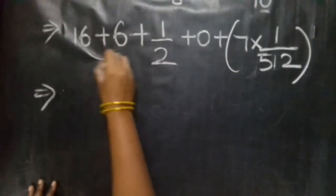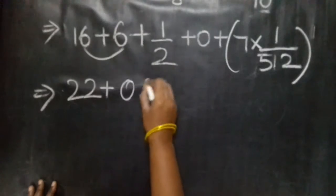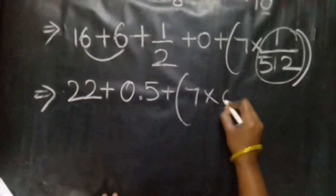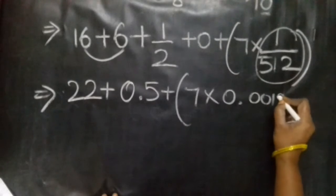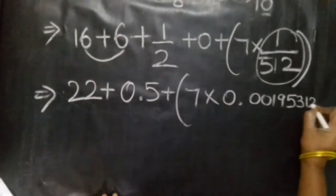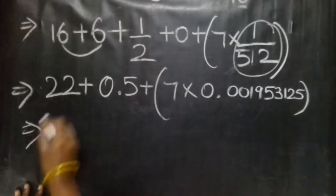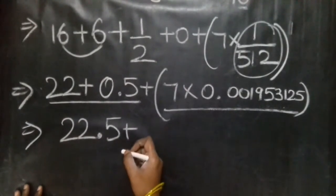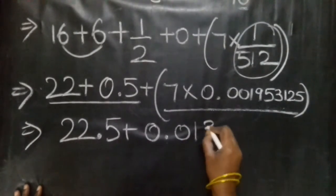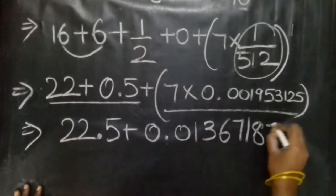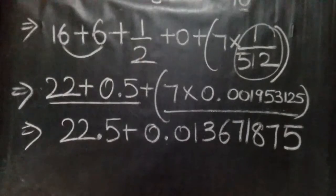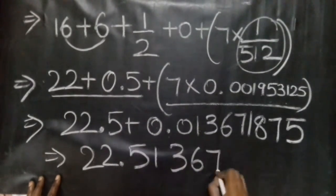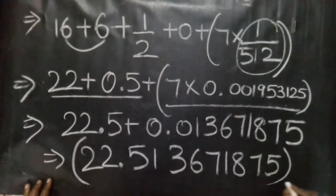Computing: 16 plus 6 equals 22, plus 4 times 1/8 equals 0.5, giving 22.5, plus 7 times 1/512. The value of 7/512 is 0.013671875. So 22.5 plus 0.013671875 gives the final answer: 22.513671875. This is the decimal equivalent of the given octal number 26.407.